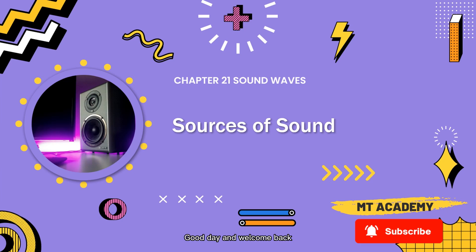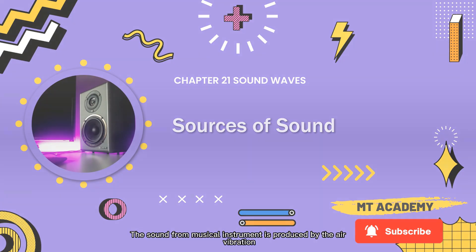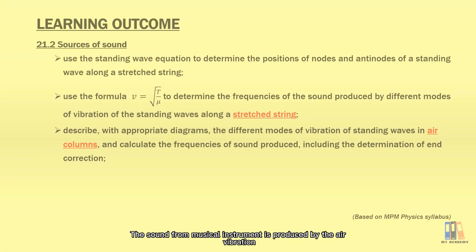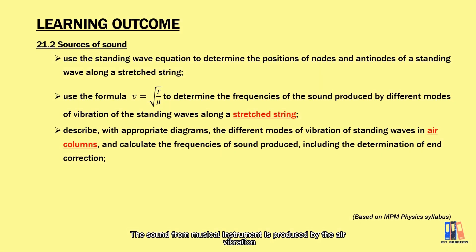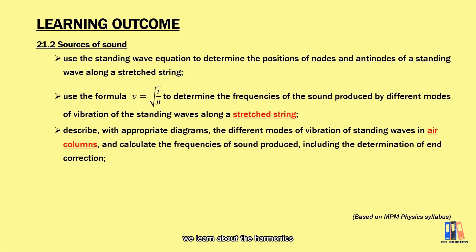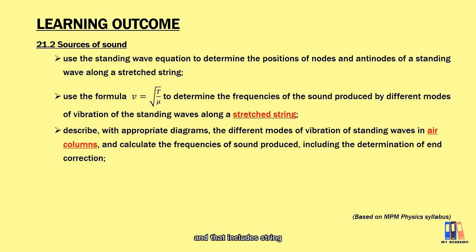Good day and welcome back. We'll talk about the sources of sound. The sound from a musical instrument is produced by vibration. In this lesson, we'll learn about the harmonics or the resonant frequency produced by three types: a string which is fixed at both ends, an open-end air column, and a closed-end air column.